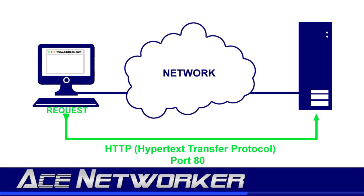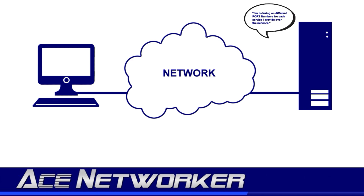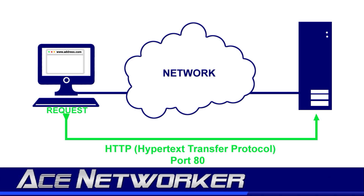When a client computer initiates a request to a server across a network, it uses specific values called port numbers to request a specific type of service. Servers listen on ports that correspond to different services. A web browser sends a request to a web server using destination port 80, and the web server listens on port 80 for those specific requests, so it knows when the client wants a web page.